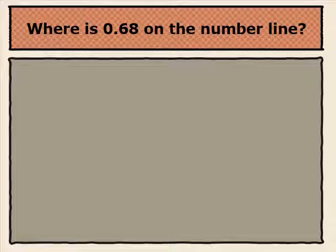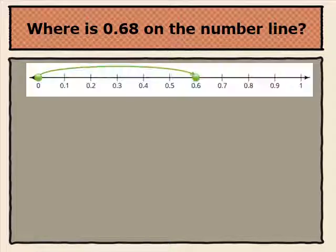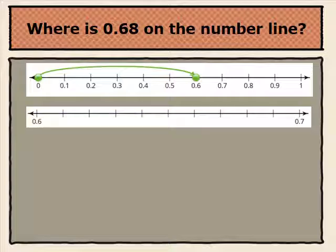Where is sixty-eight hundredths on the number line? The first step to finding sixty-eight hundredths on the number line is to first find six tenths. Sixty-eight hundredths is between six tenths and seven tenths. We follow the same steps as before. We start at six tenths, which is also sixty hundredths, and count eight spaces.